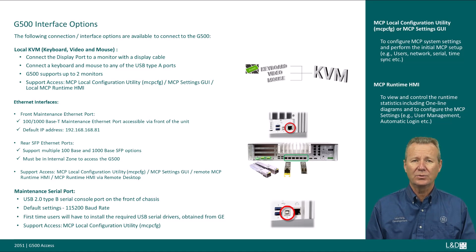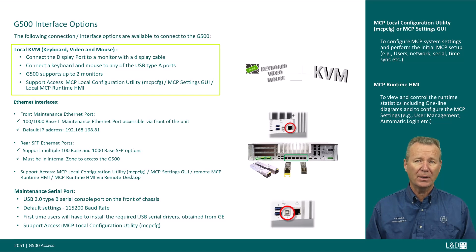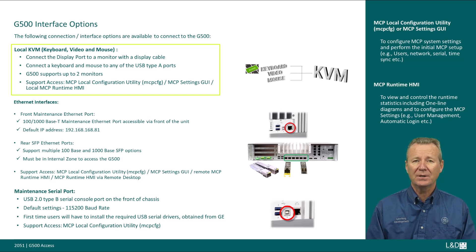This includes one local KVM where a keyboard, mouse, and monitor can be connected directly to the unit. Connect the display port to a monitor with a display cable, and connect the keyboard and mouse to any of the USB type A ports. The G500 supports up to two monitors. For support access, we'll look at the MCP local configuration utility, MCP CFG, MCP settings GUI, and local runtime HMI.